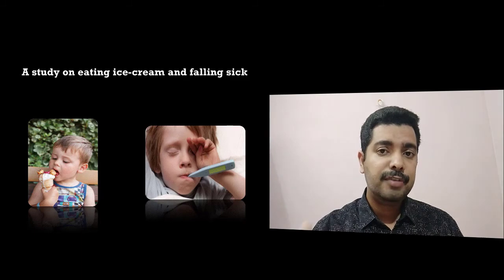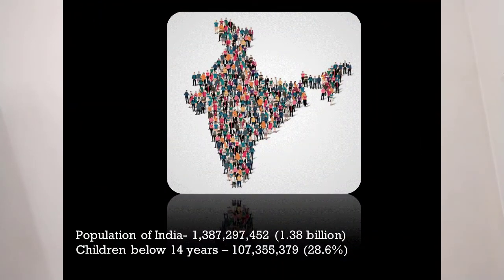So we need to do research to make sure that people are falling sick because they took ice cream. The study is supposed to be done in children below the age of 14. Now how can we do this? The world is such a big number — children in the world are such a big number.